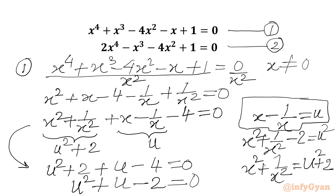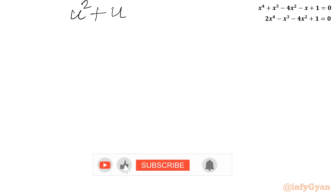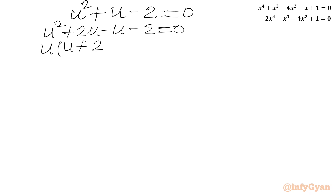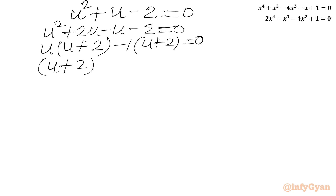Let us factorize this quadratic expression in u. Splitting the middle term: u² + 2u - u - 2 = 0. From the first two terms, u is common giving u(u + 2). From the last two terms, taking -1 common gives -1(u + 2). So (u + 2)(u - 1) = 0.